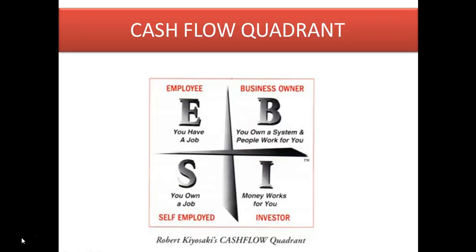In the employee quadrant, you have a job — we talked about that last week and shared seven strategies you can adopt as an employee within your organization to actually earn more. The other quadrant is the self-employed quadrant, where you own a job. The first one, you have a job, but in this one you own a job — so you literally work for yourself.